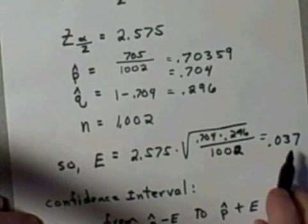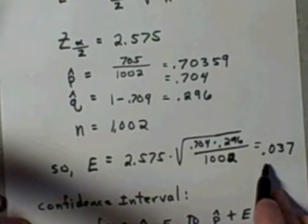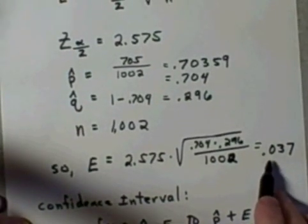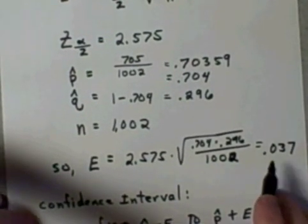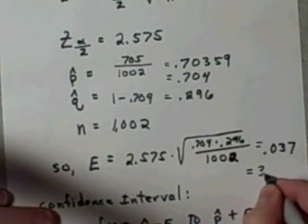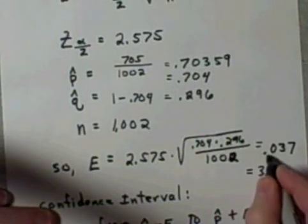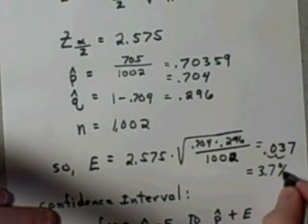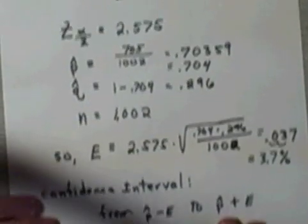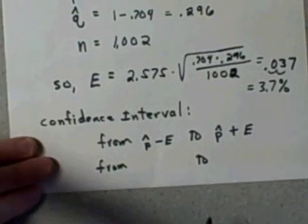What is this number? This is a decimal number that we want to convert to a percent, so this is equivalent to about 3.7% by moving the decimal point two places. Our confidence interval...